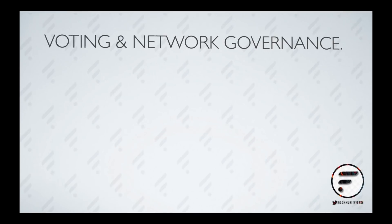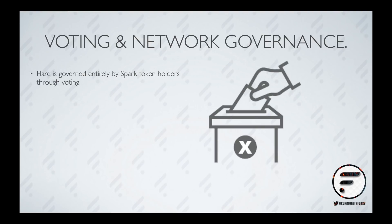Voting and network governance. Flare is governed entirely by SPARK token holders through voting. Certain decisions can be made in an automated manner on-chain, such as changing the transaction cost, changing the collateral ratio, or changing the creation fee. Other decisions regarding the Flare Network — such as adding new F-assets, changing network consensus parameters, or more complex long-term updates — require a code change. The Flare White Paper sets out a proposal, development, and testing regime for manual changes which can be initiated and voted on by SPARK token holders.